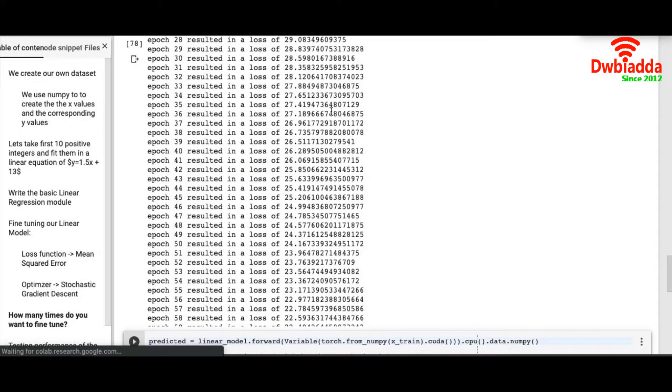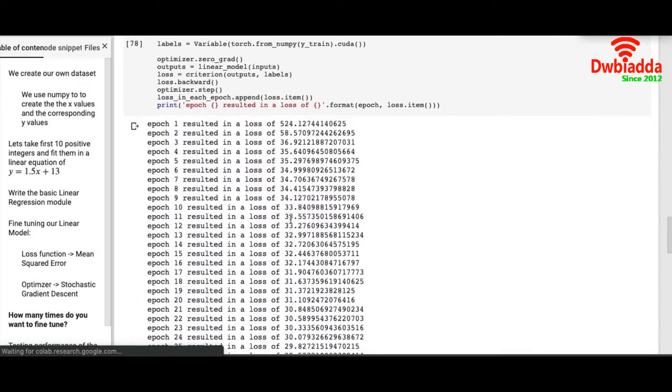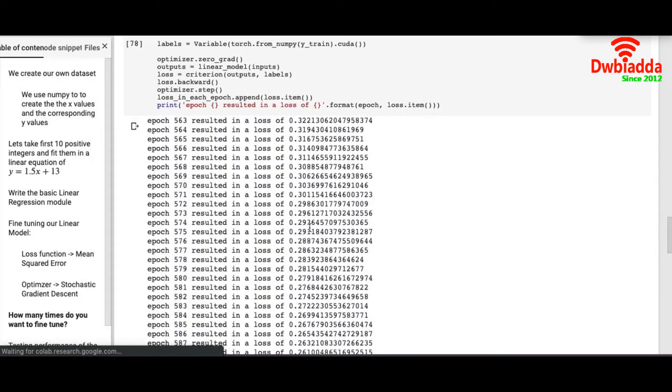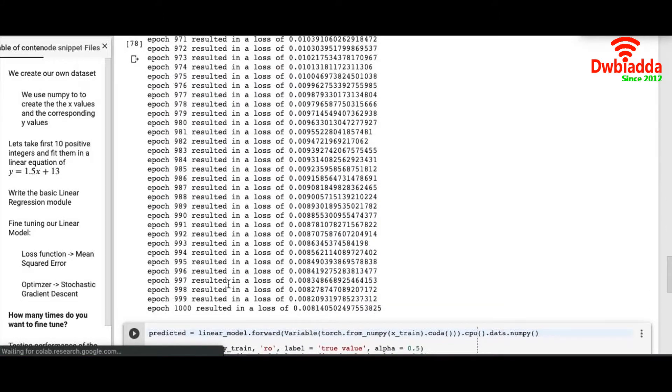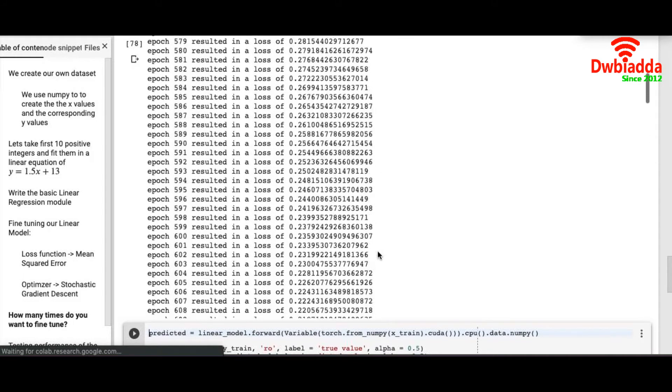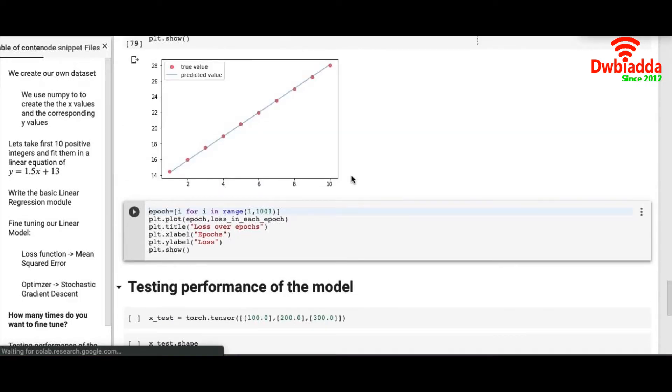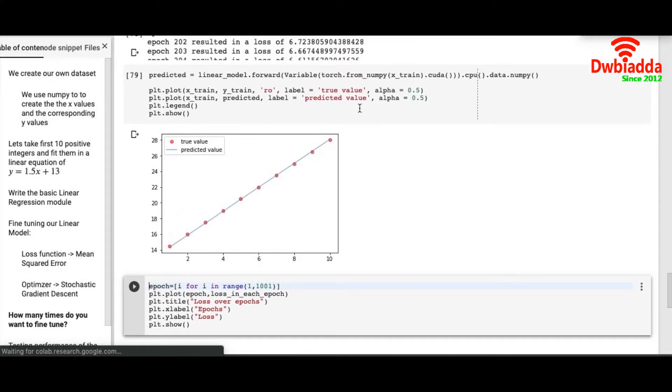Once we run it we can see our model has run. The loss started from 524.12 and gradually it decreased. And at the last step that is on 1000 epoch it gave 0.0081. So if your loss at each epoch is decreasing, your model is learning. It means you are on the right track. And after this we got our predicted and our true values. So our predicted values come on the blue line and the true values are the red dots. So we can see that our model has predicted pretty well on the true values. So I would say our model is really good.